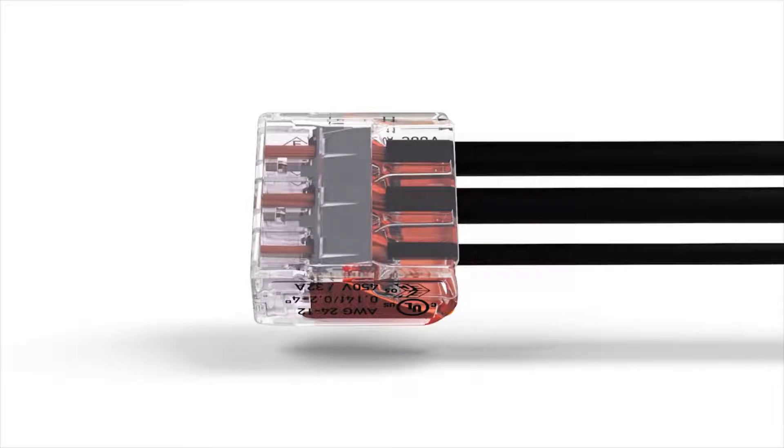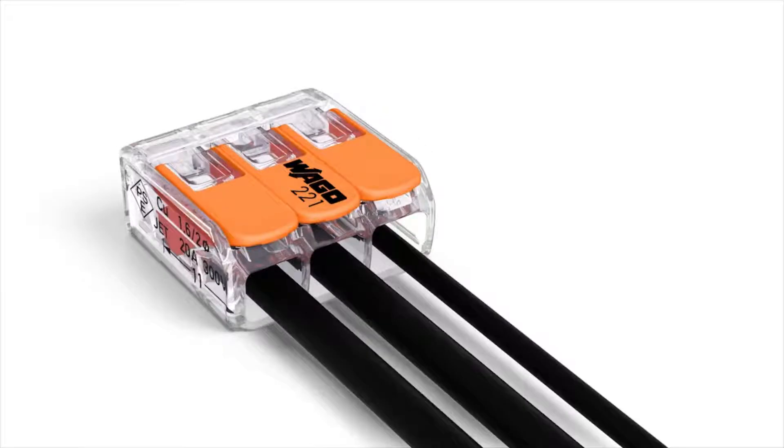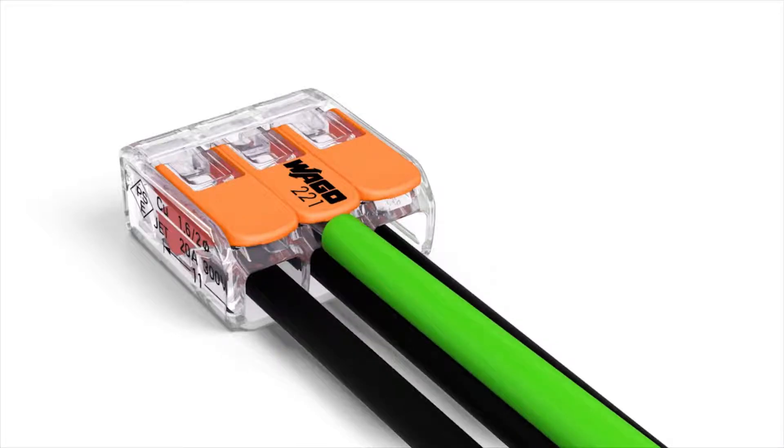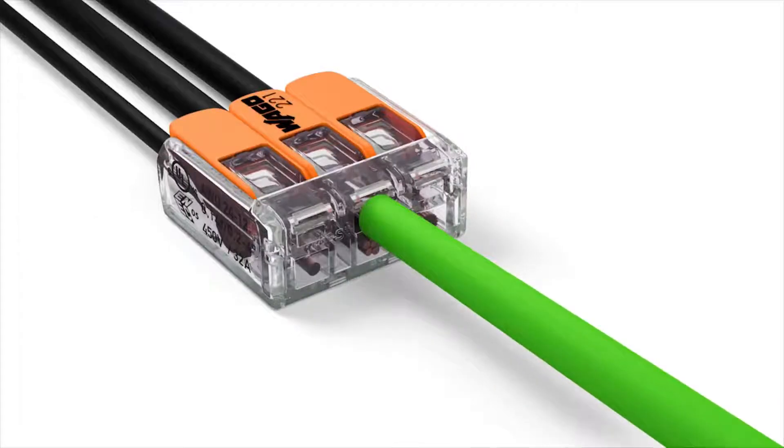A gas tight contact point provides durable and secure connection between the conductor and the current bar. Furthermore, two easily accessible test ports, one under the lever on the front of the connector, and one on the back of the connector, simplified testing, even when installed.